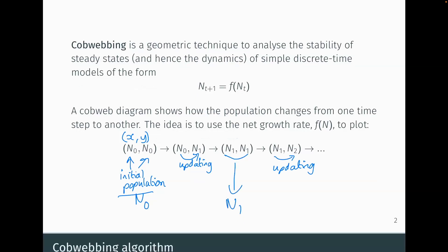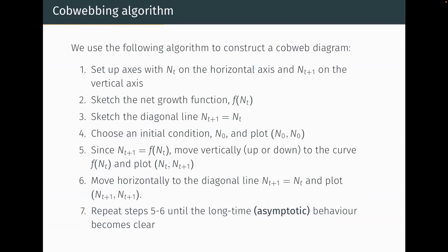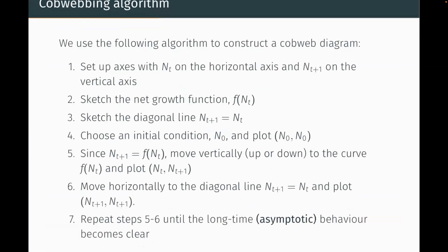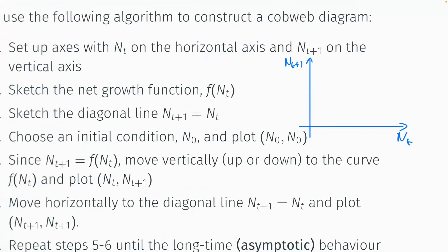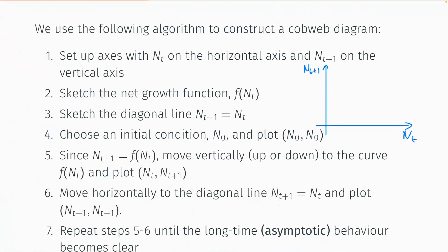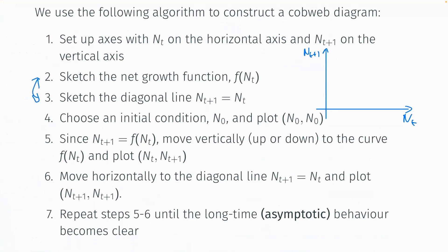To construct this, we first set up axes with our current population size n_t on the horizontal axis and the next population size n_{t+1} on the vertical axis. Next, rather than immediately sketching the growth function, I'll sketch the diagonal line first because it's easier.